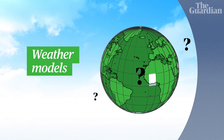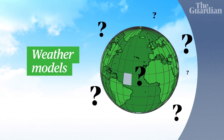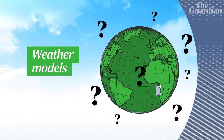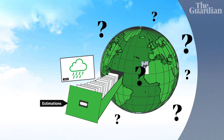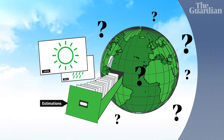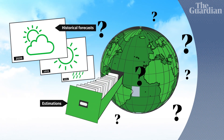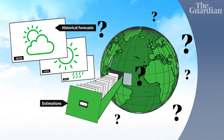Although, as it's impossible to know everything about every inch of the world at any given time, meteorologists use estimations and historical forecasts from the same place and time to fill in the gaps. Inevitably, this leaves lots of room for error.